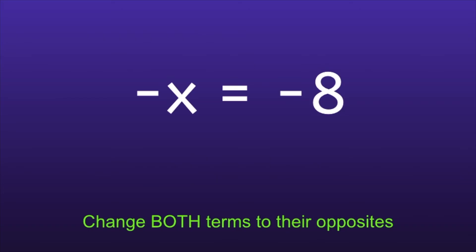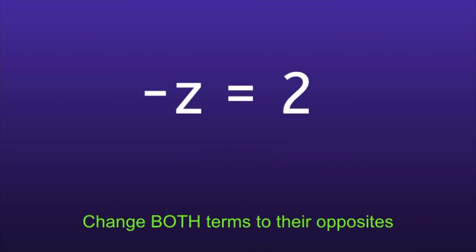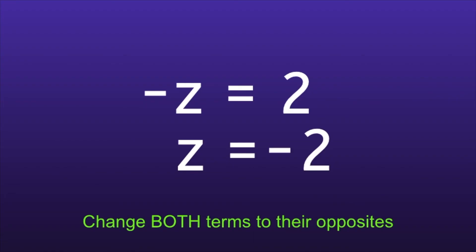Let's look at a few more examples. The first example is negative x is equal to negative 8. If we change both terms to their opposites, the opposite of negative x is positive x, and the opposite of negative 8 is positive 8. So the final solution is x is equal to 8. The next one is negative z is equal to 2. The opposite of negative z is positive z, and the opposite of positive 2 is negative 2. So the final solution is z is equal to negative 2.